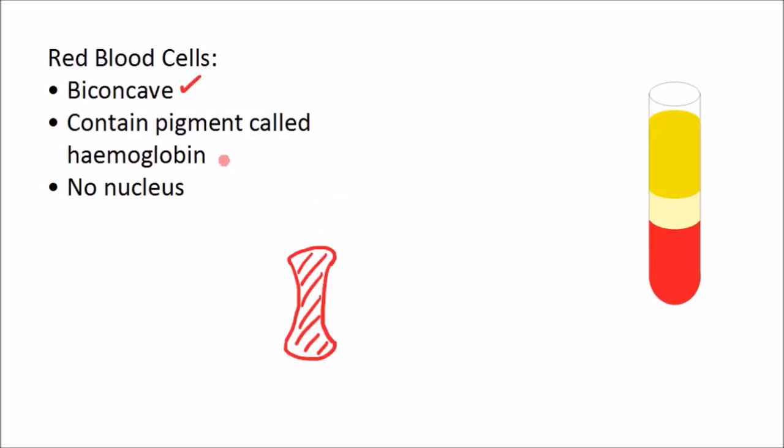They also contain a pigment called hemoglobin, and hemoglobin binds with oxygen so that the cell can carry the oxygen around. It forms a compound called oxyhemoglobin when the hemoglobin binds with the oxygen, and that allows the red blood cell to carry that oxygen to wherever it's needed.